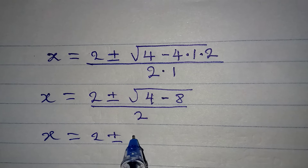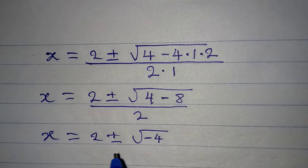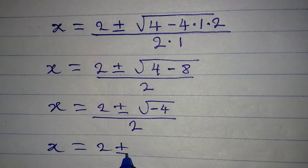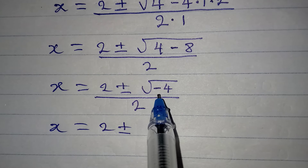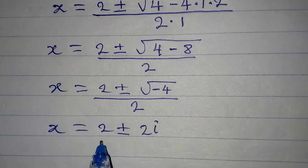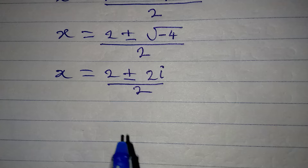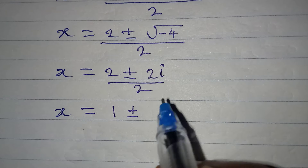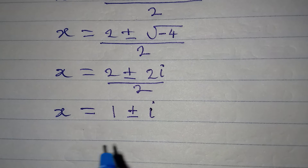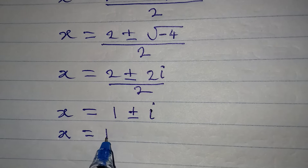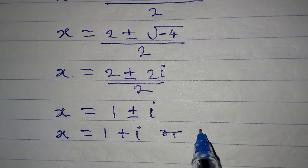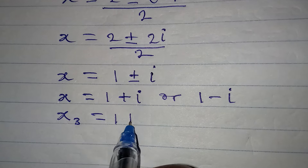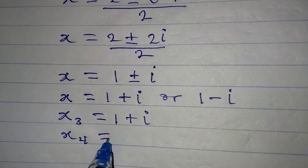So x equals 2 plus or minus the square root of negative 4, all over 2. The square root of negative 4 gives us 2i. Dividing through by 2, x equals 1 plus or minus i. This means x3 equals 1 plus i and x4 equals 1 minus i.